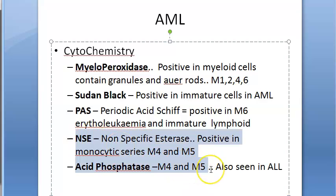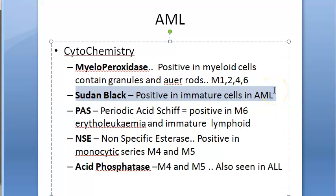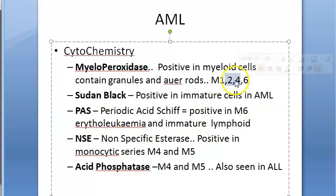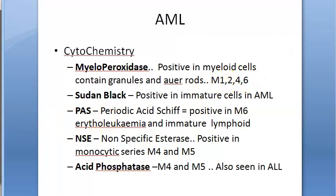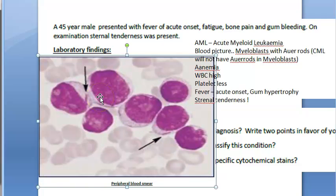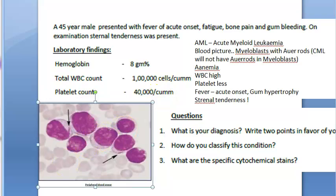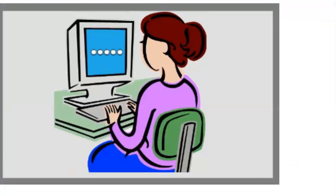Lymphoid progenitors can also stain with acid phosphatase, and Sudan Black stains all immature cells in AML. Myeloperoxidase is very important — positive in M1, M2, M4, and M6. That concludes this case study on Acute Myeloid Leukemia. By the way, those cells in the image are myeloblasts — precursors that can become neutrophils, eosinophils, basophils, and monocytes.